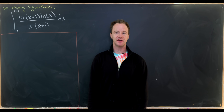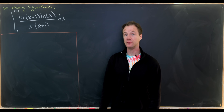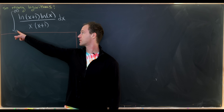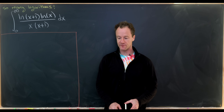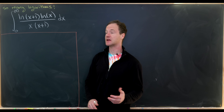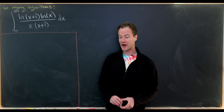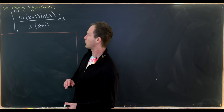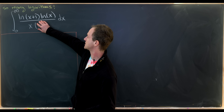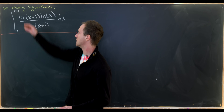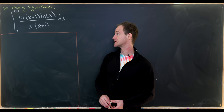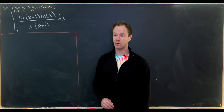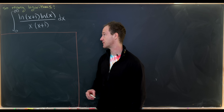Today we're going to look at a pretty interesting integral that involves quite a few natural logarithms. In particular, we will calculate the integral from zero to infinity of the natural log of (x+1) times the natural log of x, over x times (x+1). If we were to delete the (x+1) in the denominator and the natural log of (x+1) in the numerator, we could find the antiderivative of what's left fairly easily with a substitution.